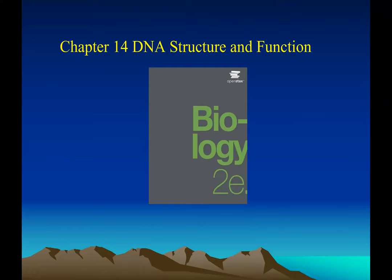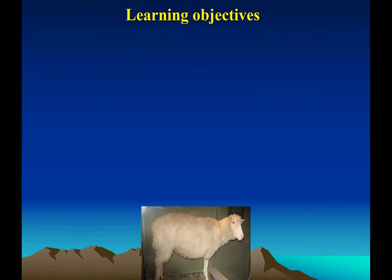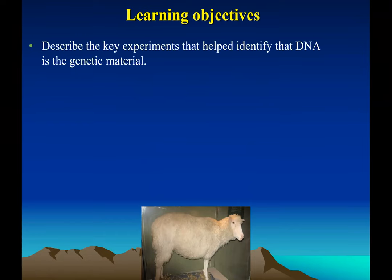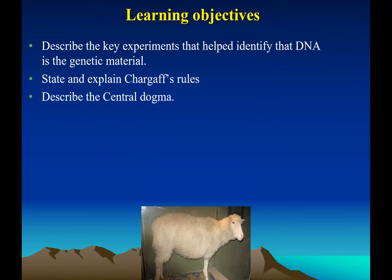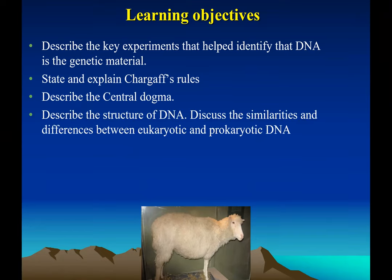Hello everyone, good morning. Let's start — we are on Chapter 14: DNA Structure and Function. The main learning objective is to understand certain key experiments that helped us identify if DNA was the genetic material. This is before the 1950s. We'll talk about Chargaff and his rules, and we'll understand the central dogma of molecular biology proposed by Watson and Crick. We'll also revise the structure of DNA.